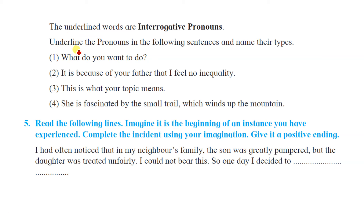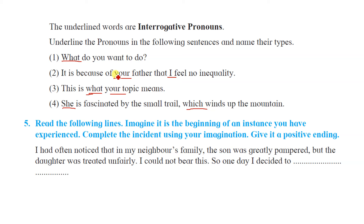First sentence: 'What do you want to do?' — here 'what' is an interrogative pronoun. 'It is because of you and I' — 'I' is a personal pronoun. 'This is what your topic means' — 'your' is a personal pronoun. 'She is fascinated by small trails which...' — 'she' is a personal pronoun and 'which' is a relative pronoun. 'What is interrogative pronoun. It is because of you and I' — these are personal pronouns.